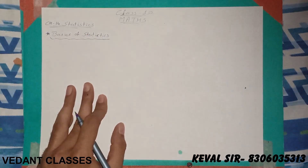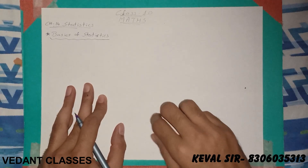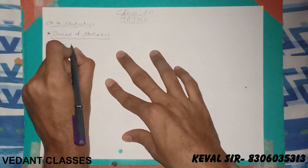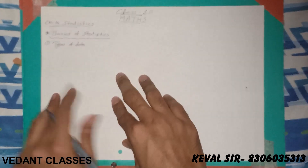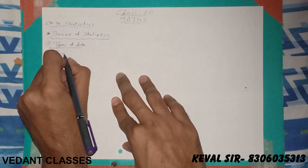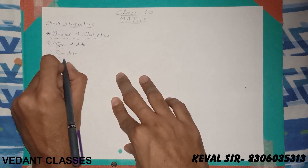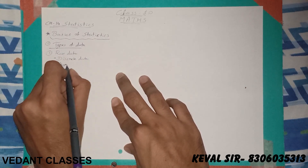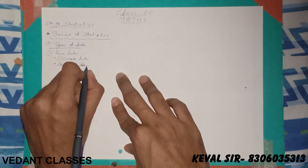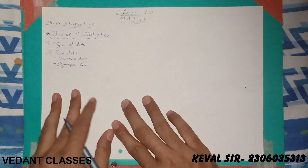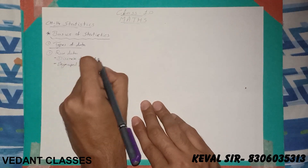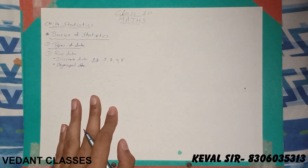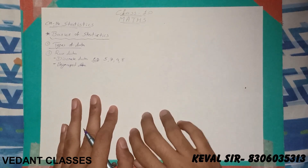Today we are going to see some basic topics that you have already learnt in class 9. Let's distinguish the types of data usually given in questions. The first type is raw data, also called discrete data or ungrouped data. Raw data is given in the form like 5, 7, 9, 8, and you are asked to find the measure of central tendency — that is mean, median, or mode.